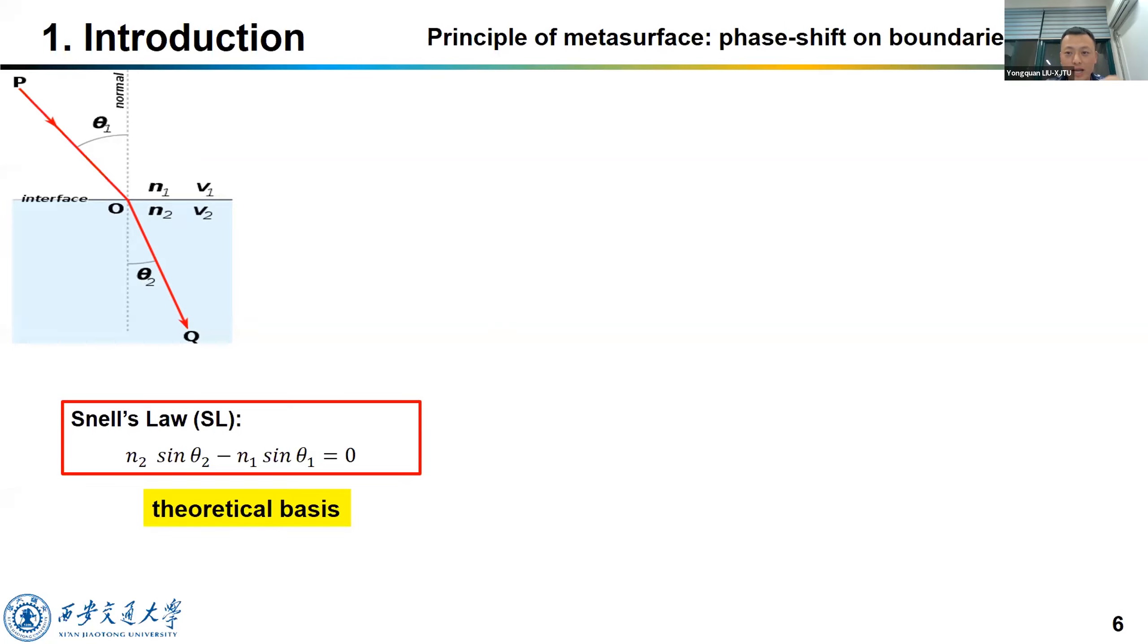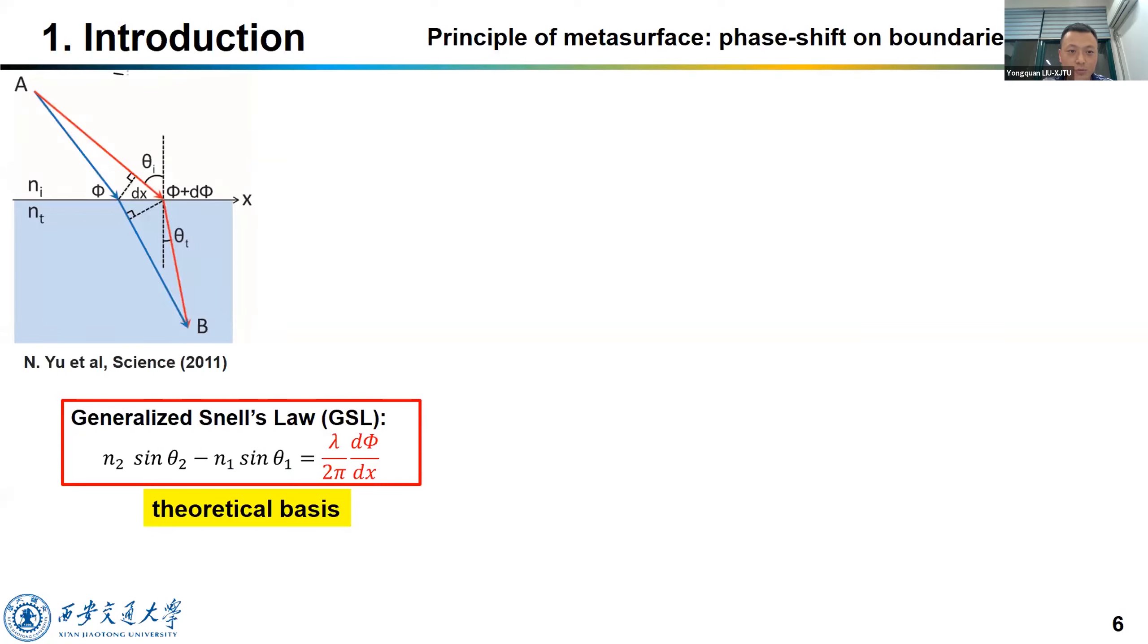The basic principle of metasurface is the generalized Snell's law. We are all familiar with Snell's law, right? When a light passes through a boundary between two different media, the ratio of the sines of the angles of incident and the reflection is equal to the ratio of refractive index. Namely, n2 times sin theta 2 equals n1 times sin theta 1. Now, if we use a metasurface to design an artificial boundary, the boundary can be inhomogeneous. Then Snell's law should be generalized into this form. Accordingly, the wave propagation direction is changed.